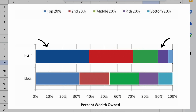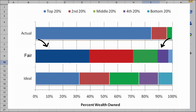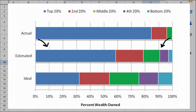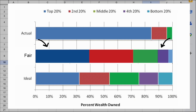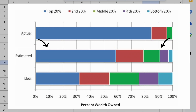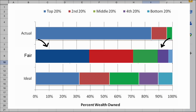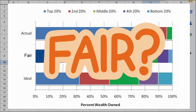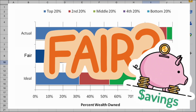This distribution is much more equal than the actual distribution, and falls in between the distribution that people estimated the wealth distribution to be in the study and the proposed ideal distribution. But this still might not be fair, because households could actually save more money and invest that money as well.